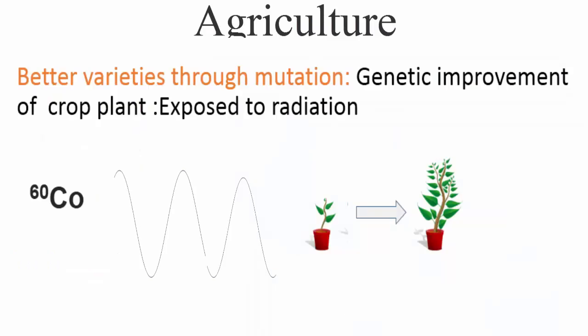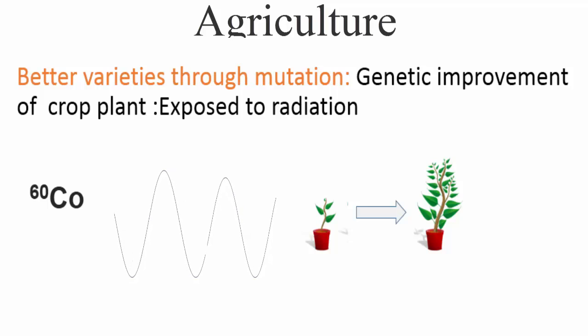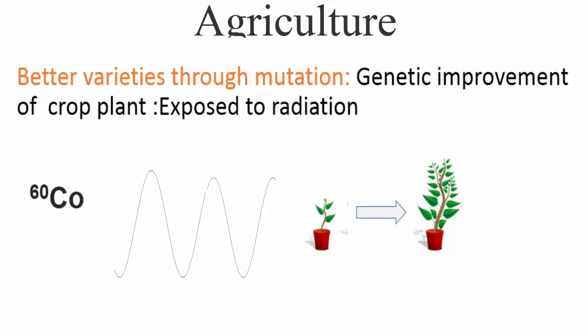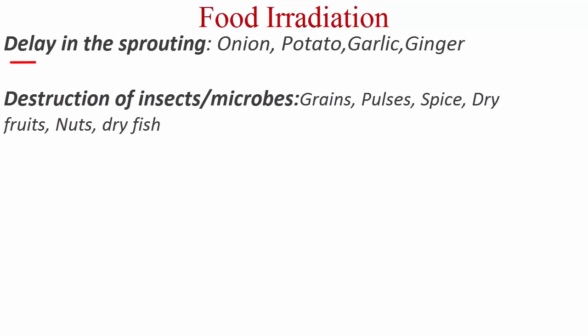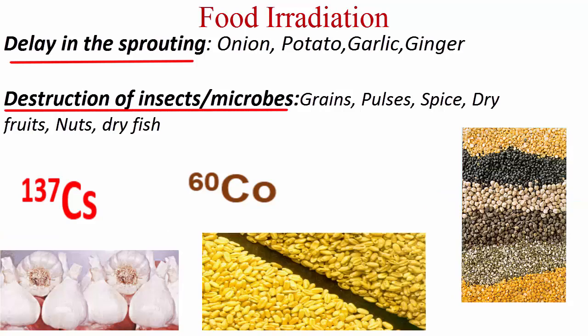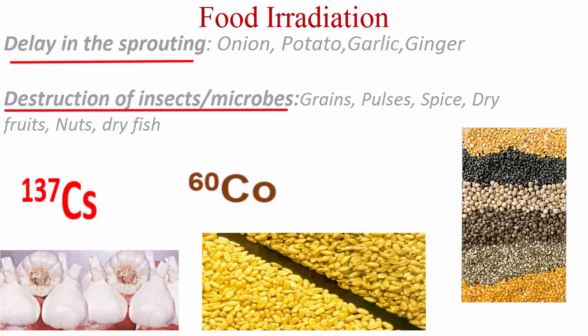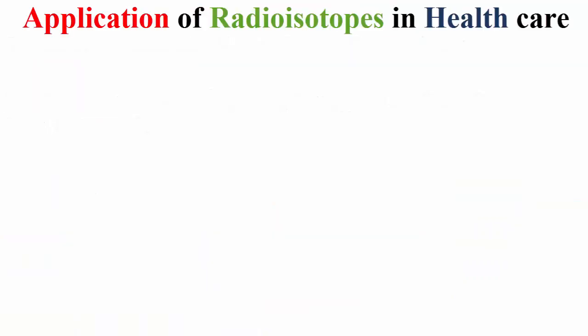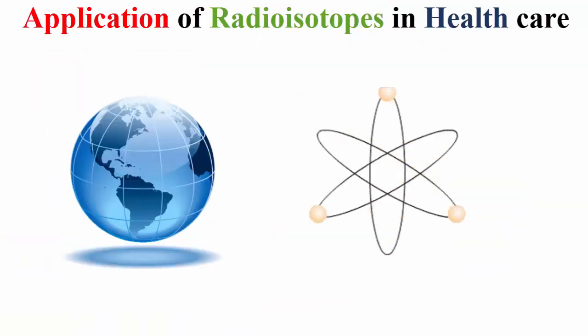Application of radioisotopes in agriculture: radiation energy is used for genetic improvement in plants through mutation. For preservation, a method called food irradiation is used, in which delay in sprouting can be obtained, as well as destruction of insects using suitable gamma sources.